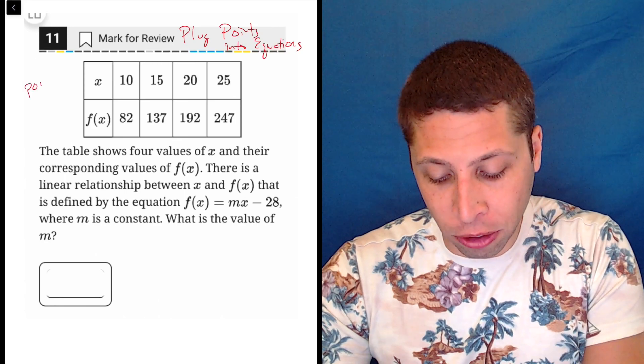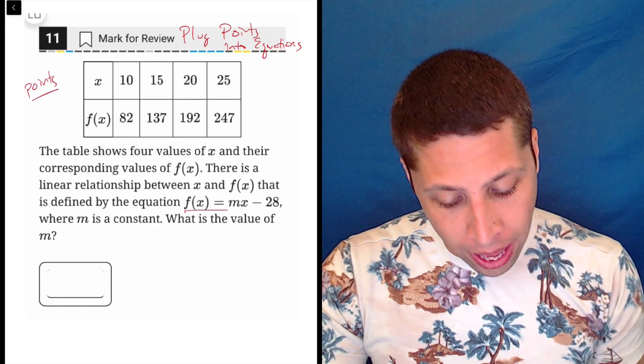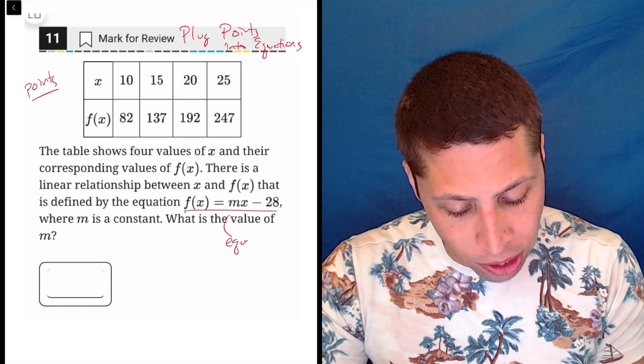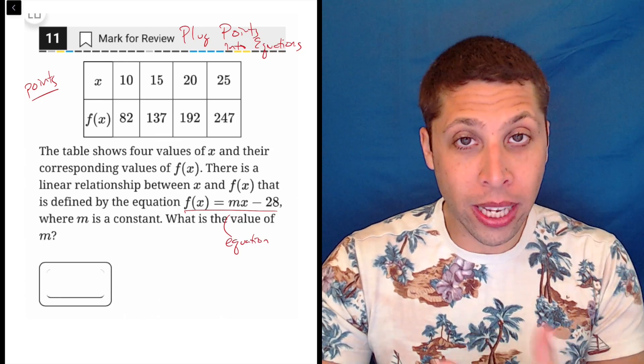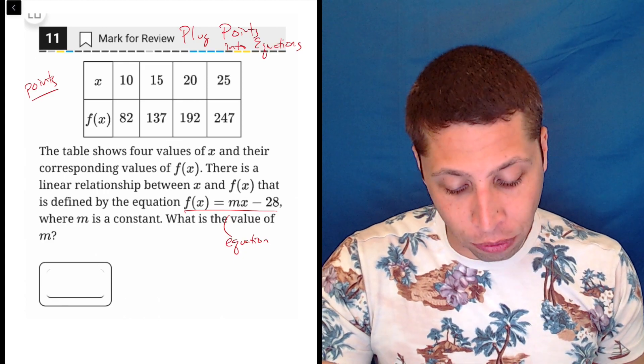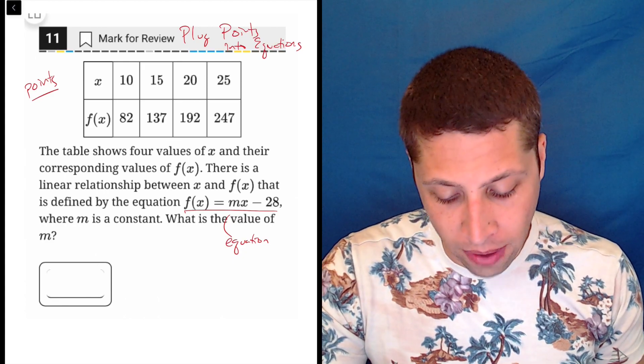They clearly are giving us a bunch of points in this chart, and down here they give us an equation. So we should make sure that there's no twists involved here, but hopefully I can just take a point and plug it into the equation. They say that these are four values of x and their corresponding values of f(x).